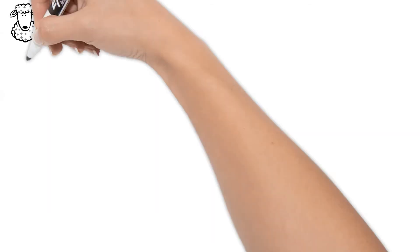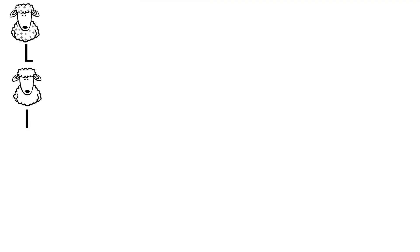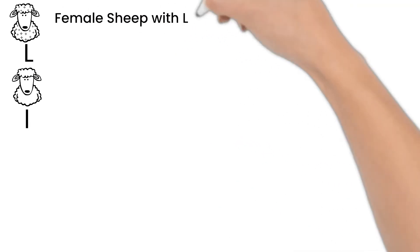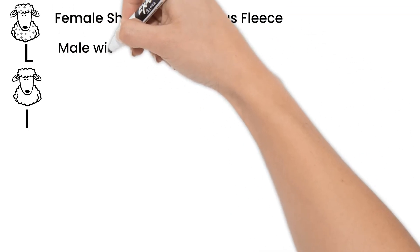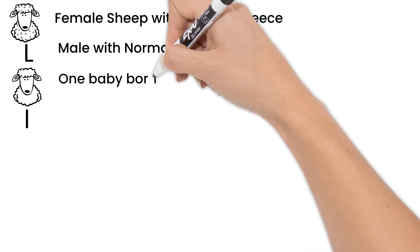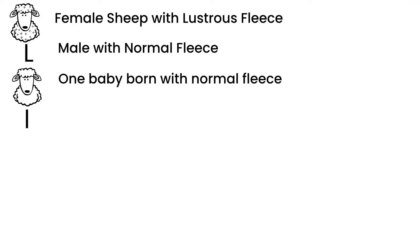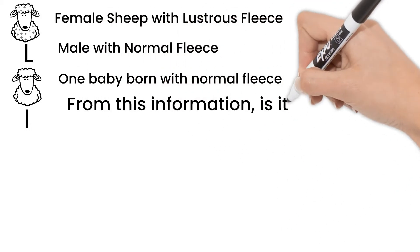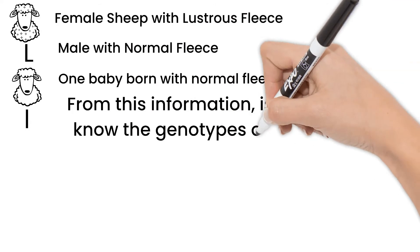Let's look at one more example. In sheep, lustrous fleece is dominant over normal fleece. A female sheep with lustrous fleece mates with a male sheep with normal fleece. One baby sheep is born with normal fleece. From this one baby, is it possible to know what the genotypes of the parents are?